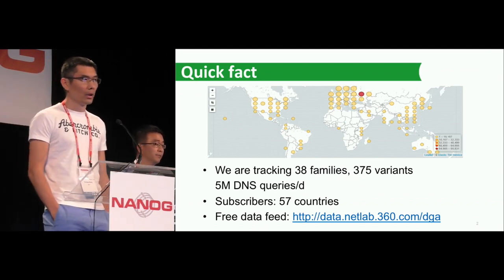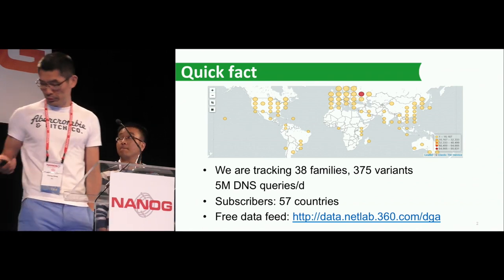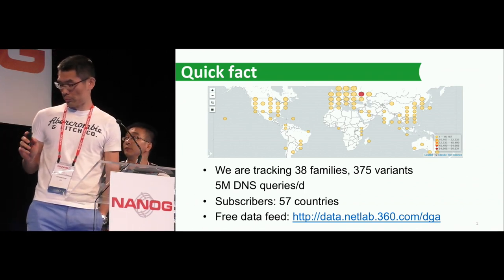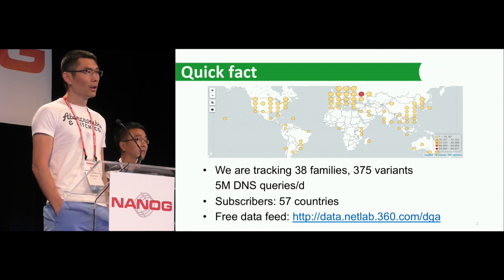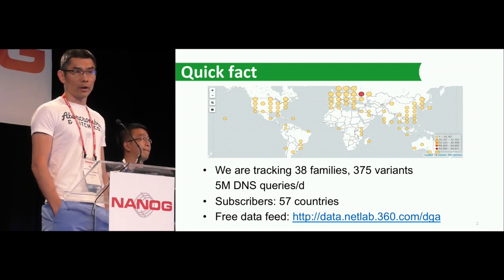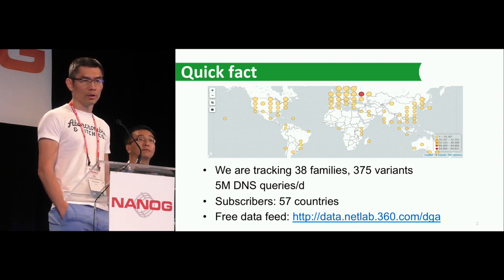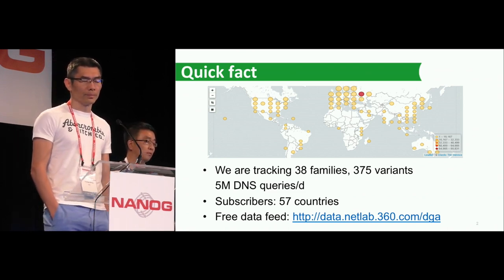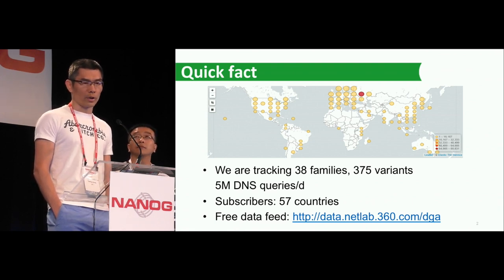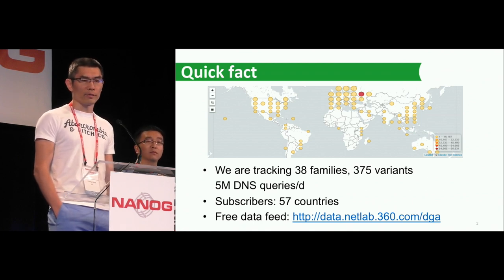First, some quick facts. Currently, we provide our DGA data feed at this URL. That DGA feed updates once every day, and it's a .txt file. The file itself is about 70 megabytes. It has more than 1 million DNS entries in that file, so it's a fairly large DNS blacklist. In our feed, we are tracking right now 38 DGA families with 375 DGA variants.